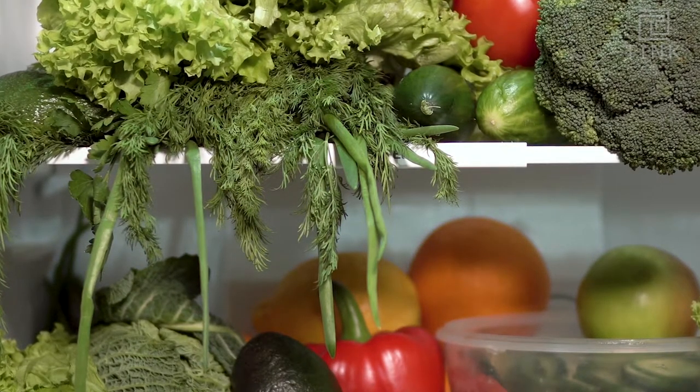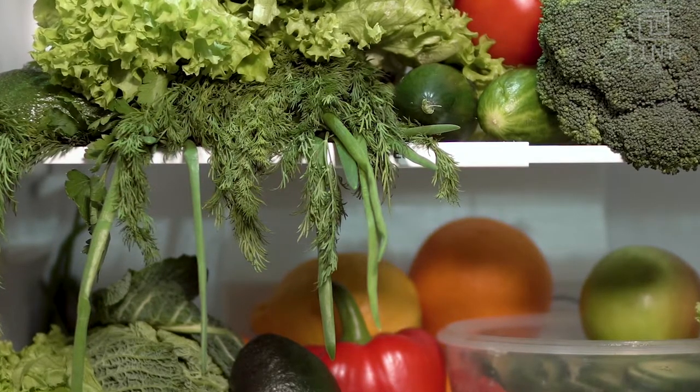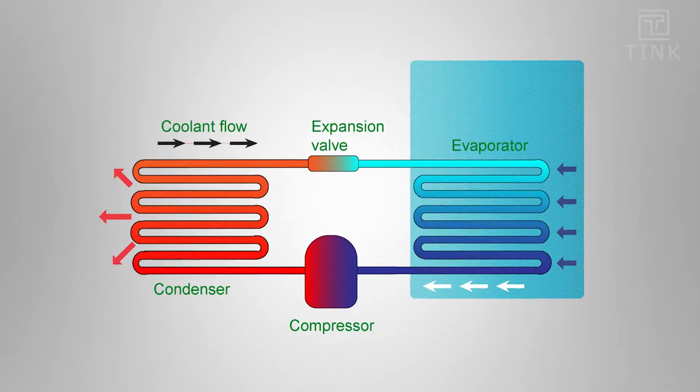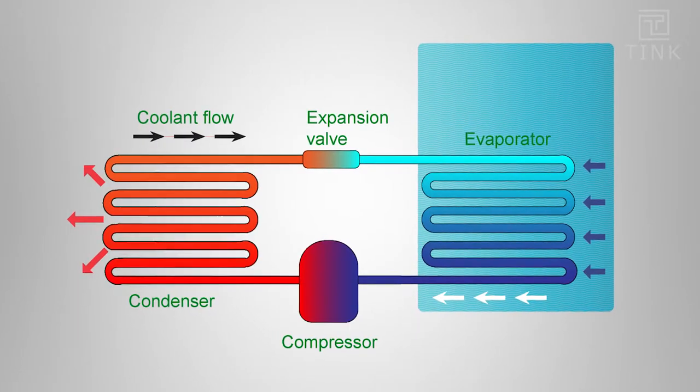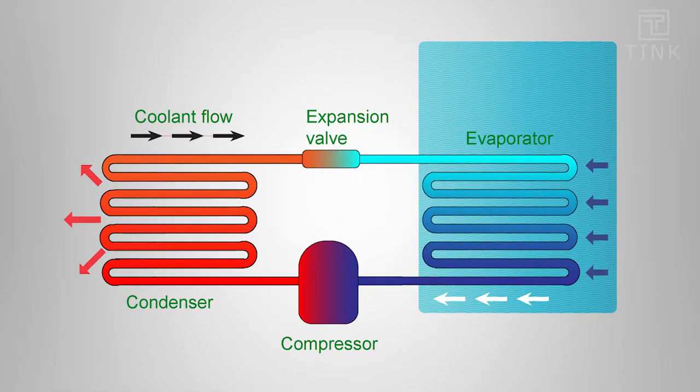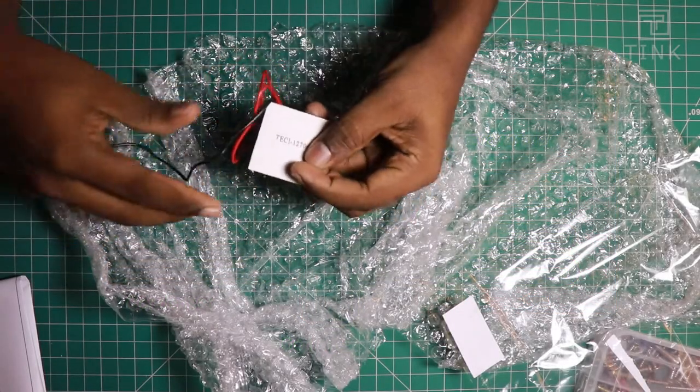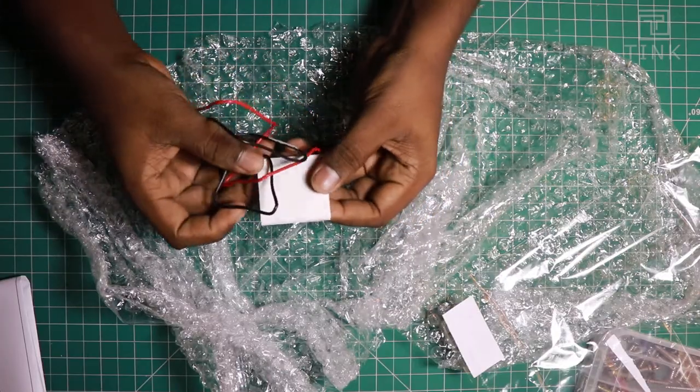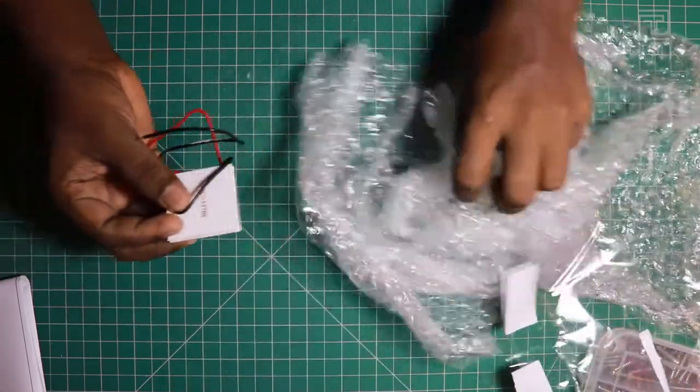A fridge basically needs a cooling element. Our traditional refrigerators have a long list of components such as the compressor, condenser, evaporator etc to push the heat out. But the fridge that we are going to build will not need any of these items. I'm going to show you how to build the fridge by merely using a Peltier module.